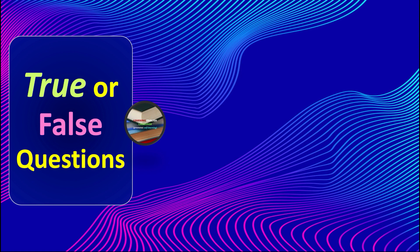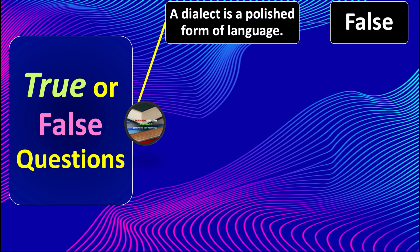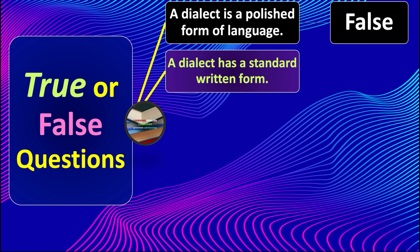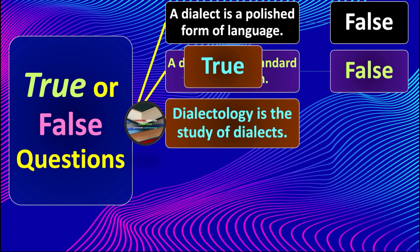Now let's look at some true or false questions to check our comprehension. First: a dialect is a polished form of language — true or false? That is false; a dialect can never be a polished form of language. Second: a dialect has a standard written form — true or false? That is also false; a dialect in fact has no written form. Third: dialectology is the study of dialects — true or false? That is of course true.